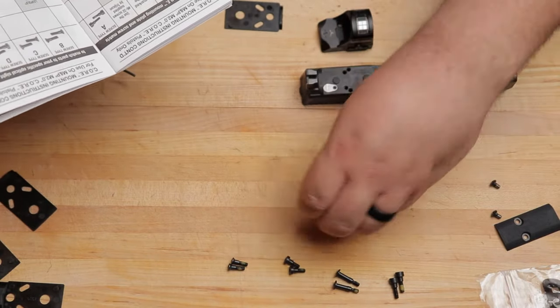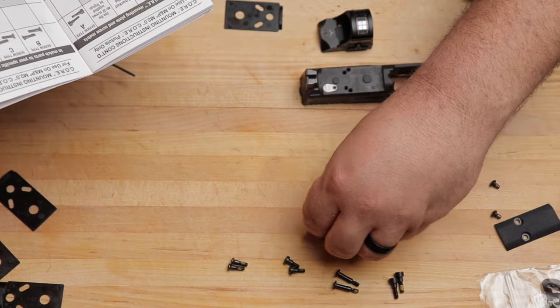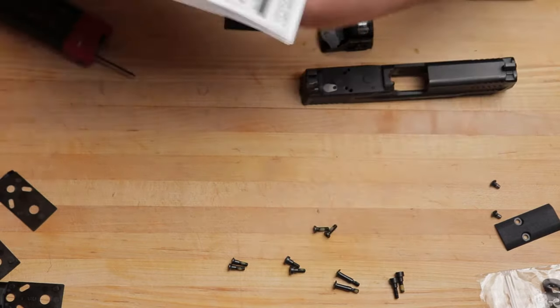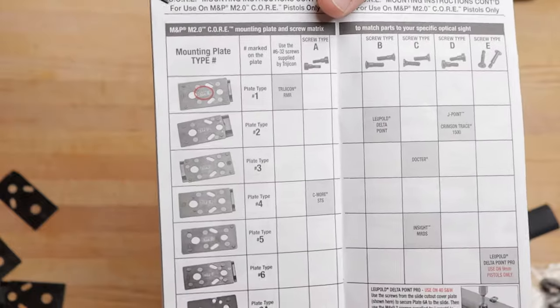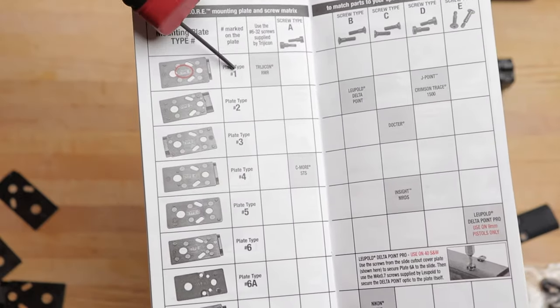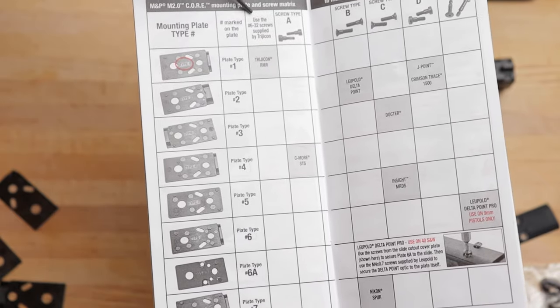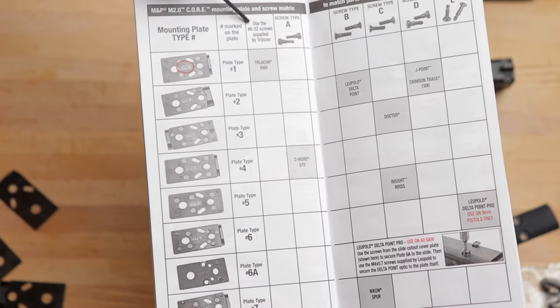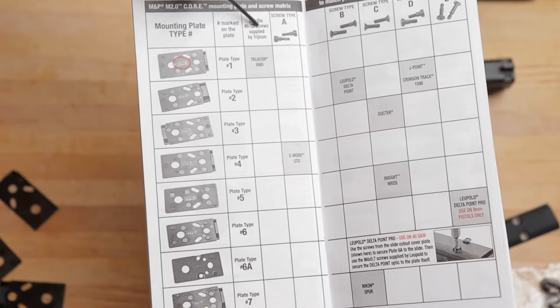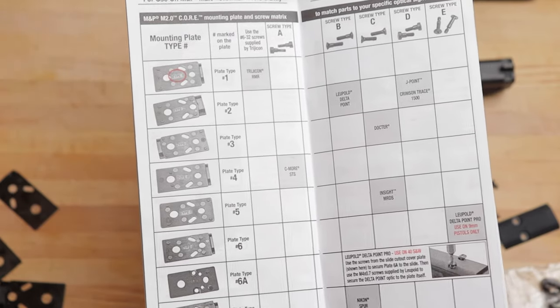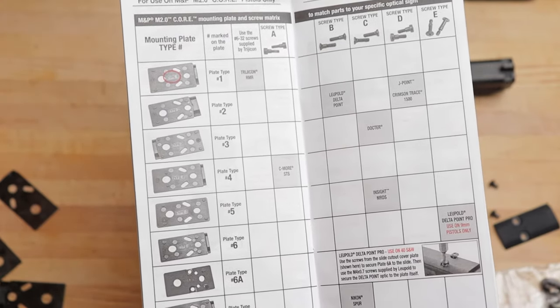So, voila, that's how you find them out. In my case, I had type one. This is the Trijicon RMR footprint, and this one, if you go up, it says use the 6-32 screws supplied by Trijicon. In my case, I use the ones that Holosun gave me.